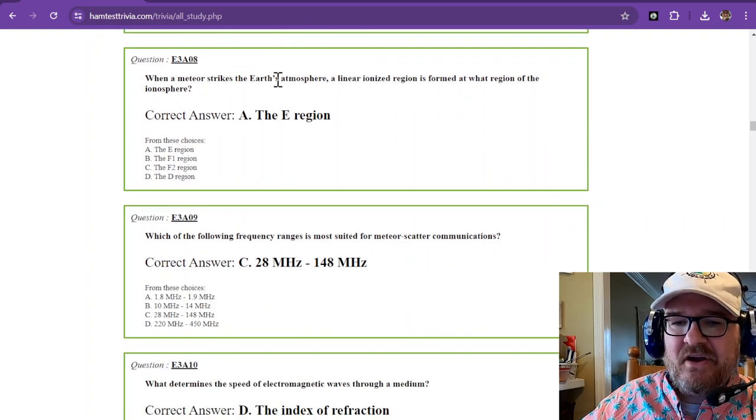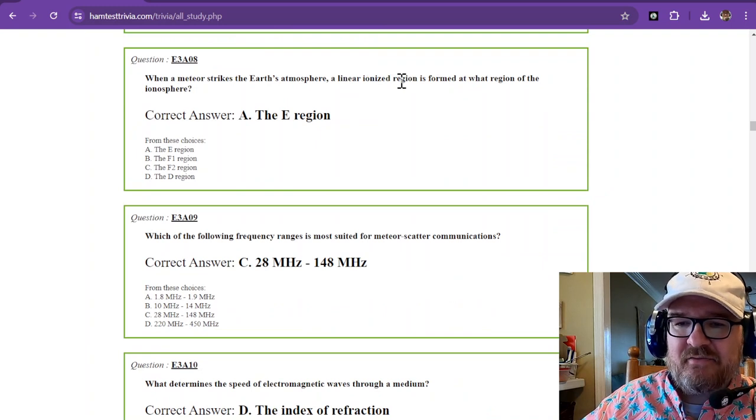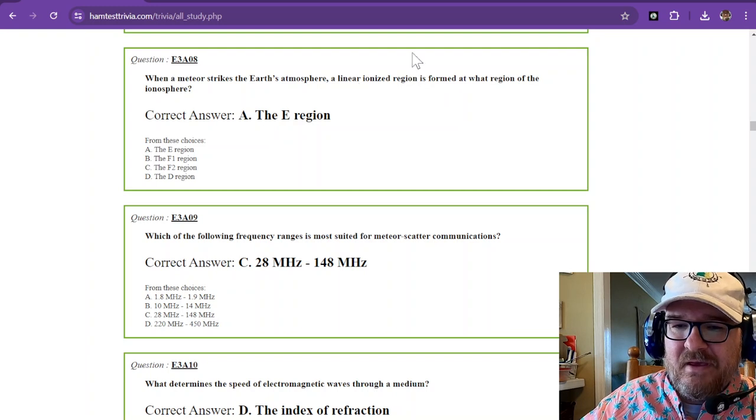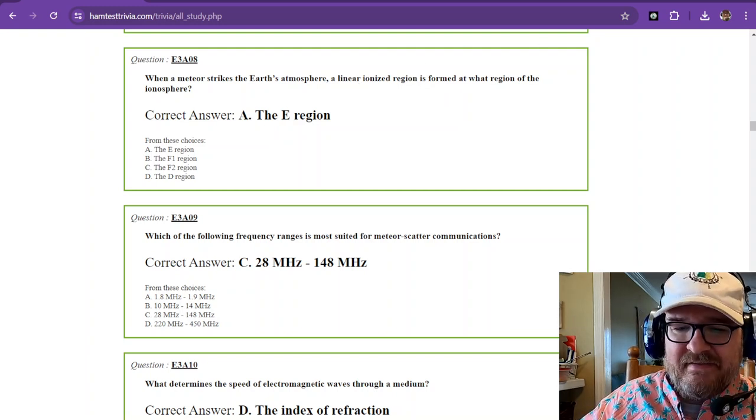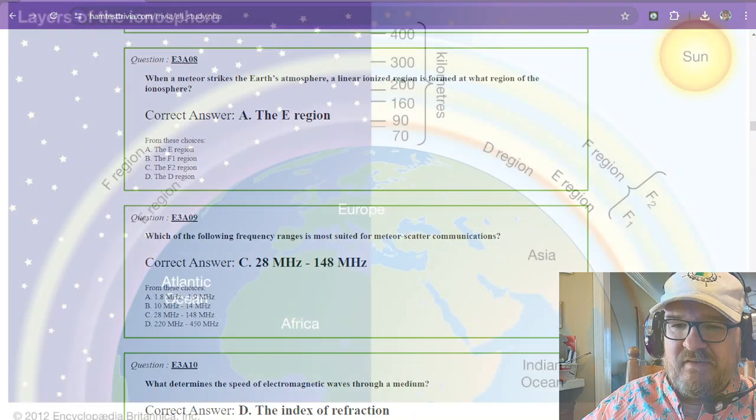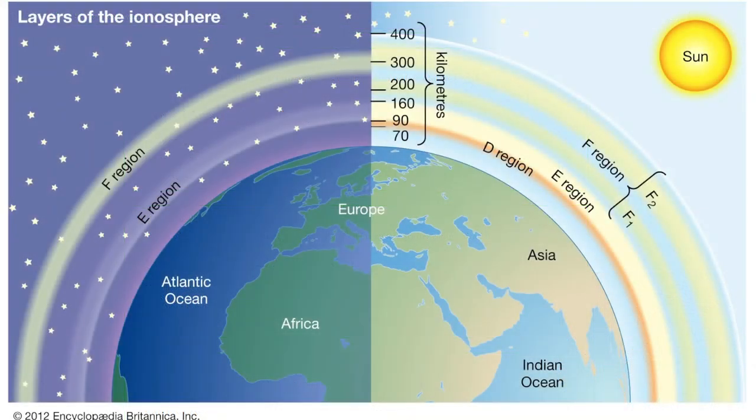When a meteor strikes the Earth's atmosphere, a linear ionized region is formed at what region of the ionosphere? We're just going to remember that that is the E region. So here's what the atmosphere looks like, the ionosphere, during the day and during the night. You can see that during the day, the F region splits into two sections. You have F1, the lower one, and F2, the higher region. Then you have the E region. And then you have the D region. And the E region is where that extra ionization is going to happen.